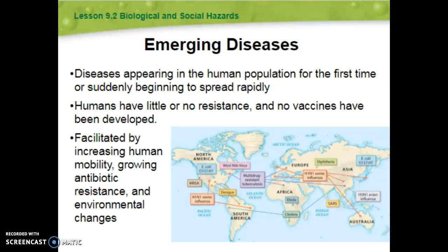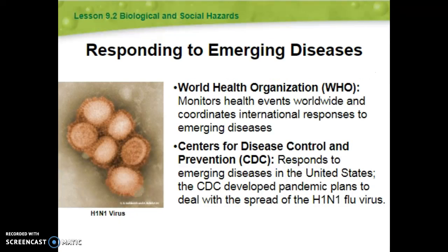Climate change allows things like mosquitoes to travel into ecosystems they previously couldn't live in. It used to be too cold for mosquitoes to move up into northern Michigan and Canada, for example. Now West Nile virus spreads into those areas because the host organism, the mosquito, can travel further.